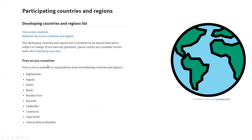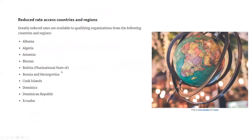There are free-access countries — if your country belongs to any of these, you can submit to this journal without any fees. If your country belongs to another category, you would pay a reduced fee. Always make sure to check if your country qualifies so you can waive the fees. If you found 10 journals and one of them has a waiver for your country, you can submit to that journal.